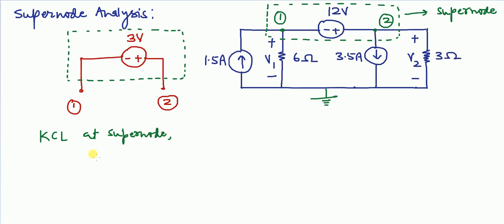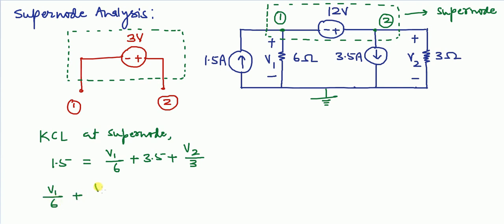Starting with KCL at the super node: 1.5 ampere current is entering at this super node, and current is leaving through the 6 ohm resistance, that is V1 by 6. One more current of 3.5 ampere is leaving, and current is leaving through the 3 ohm resistance, that is V2 by 3. So we have the equation: V1/6 + V2/3 = 1.5 − 3.5 = −2. This is the first equation obtained by applying KCL at the super node.